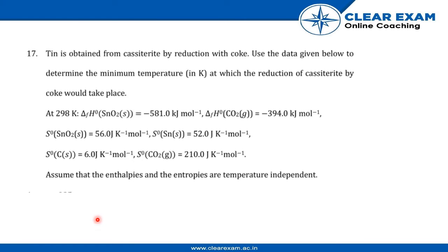Welcome back. The question is, tin is obtained from cassiterite by reduction with coke.